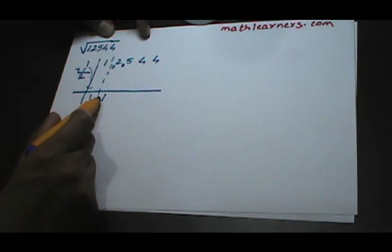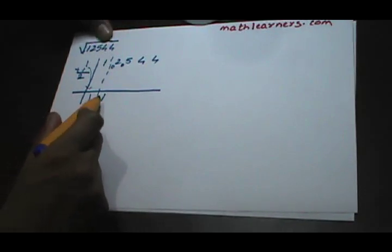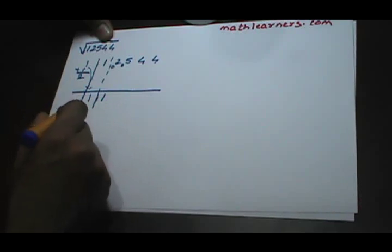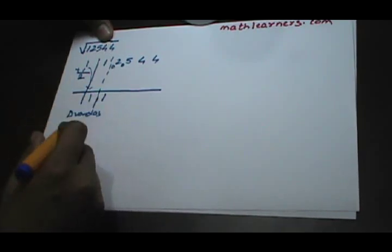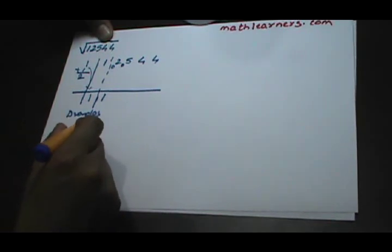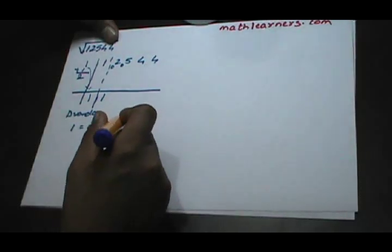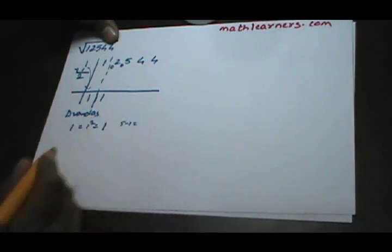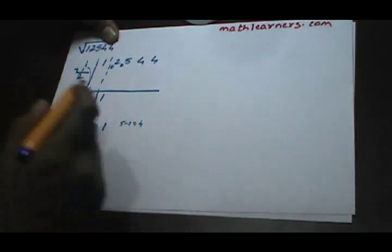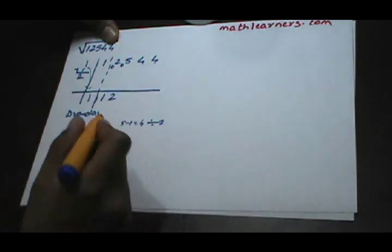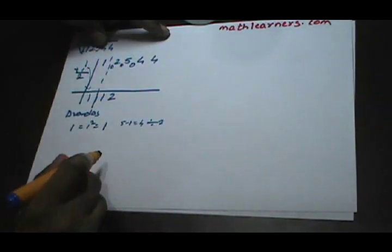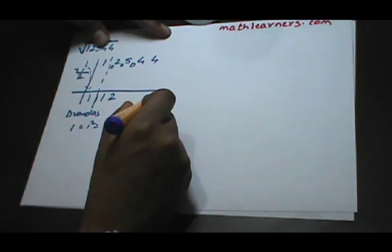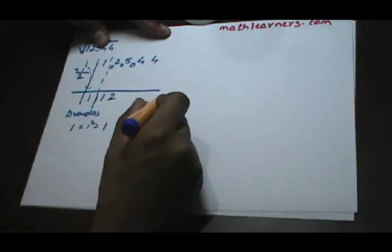Now, after the vertical line is filled, we need to calculate the dwandha of each digit. Dwandha of 1 is 1 squared, which is 1. This 1 is subtracted from the combination of 0 and 5, so 5 minus 1 equals 4. This 4 is divided by our divisor 2, giving quotient 2 and remainder 0. So we follow a series of: dwandha, then subtraction, then division.